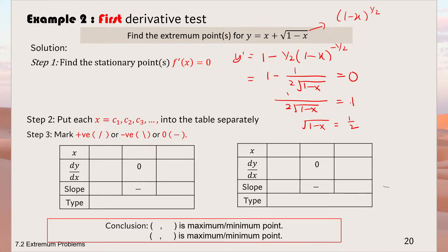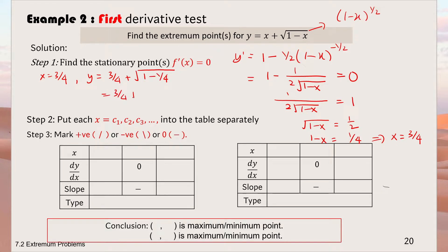When x = 3/4, substituting into y gives y = 3/4 + √(1 - 3/4) = 3/4 + √(1/4) = 3/4 + 1/2 = 5/8. So the stationary point is (3/4, 5/8). Since there is only one stationary point, we only need one table for the first derivative test.